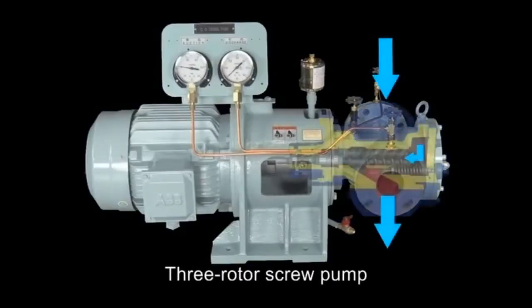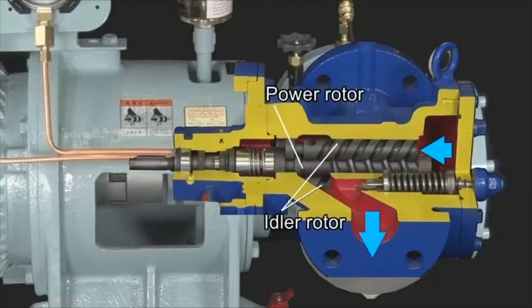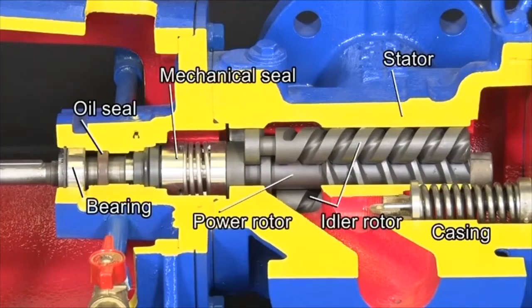The three rotor screw pump consists of one power rotor housed in a casing and two idler rotors that are meshed with the power rotor. Main parts are the bearing, oil seal, mechanical seal, stator, power rotor, idler rotor and casing.